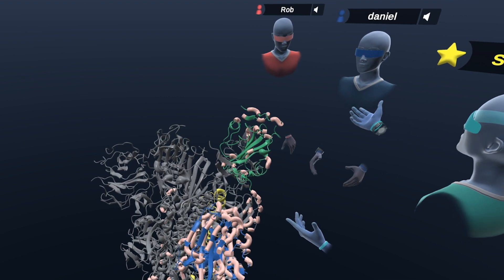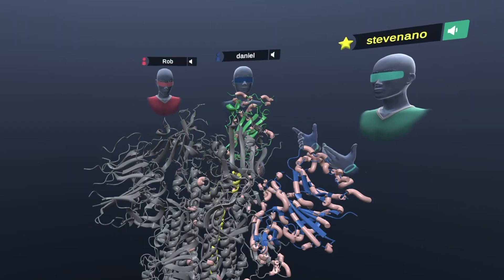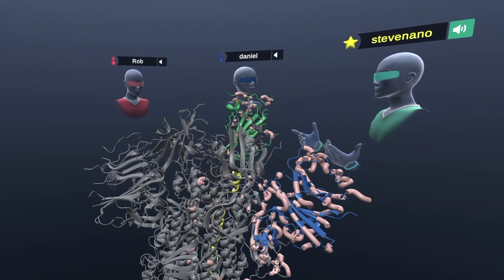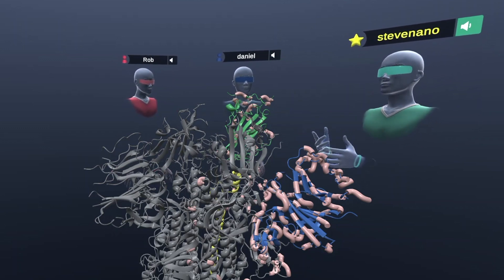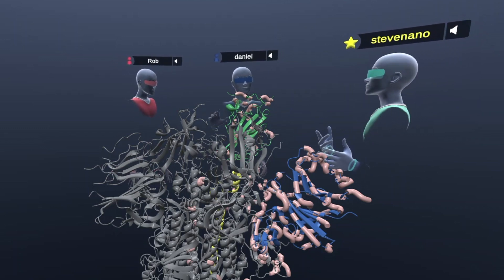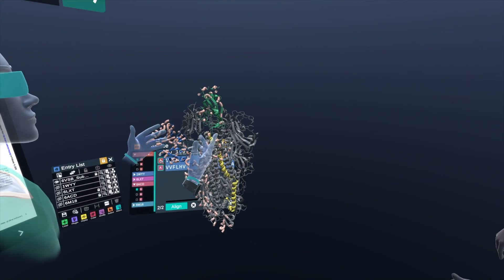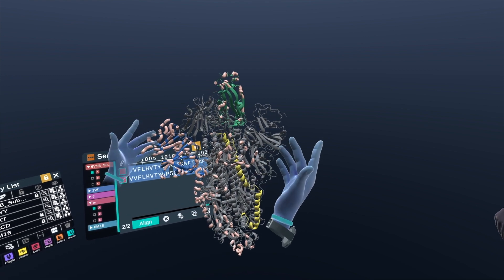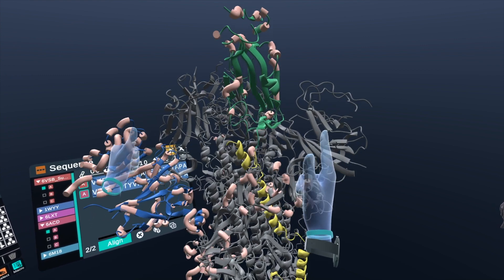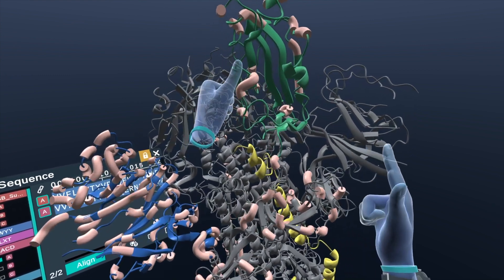So with us today we have Daniel and Rob from the Nanome team, and we're going to be talking about a few key areas about the spike protein and talking a little bit about just how it works, as well as the areas that are conserved across the original SARS outbreak in 2003 all the way up to the current SARS-CoV-2 outbreak that we have going around 2019, 2020.